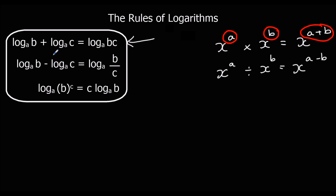Division is similar. If you divide indices you subtract the powers, and here the logs are being subtracted, so that means you divide the two answers. So log base a of b minus log base a of c equals log base a of (b/c). The base stays the same throughout.